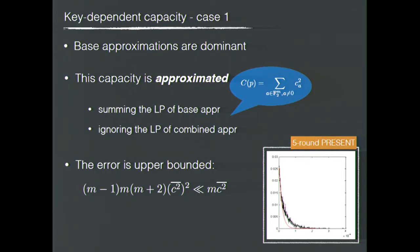An intuitive explanation for Case 1 is as follows. We consider only the correlations of the base approximations as dominant. According to the known relation between capacity and correlation, the capacity can be approximated by summing the linear potential of only the base approximations, ignoring the linear potential of the other combined approximations. The approximation error is upper bounded by a very negligible value, especially when the average square correlation is small enough.